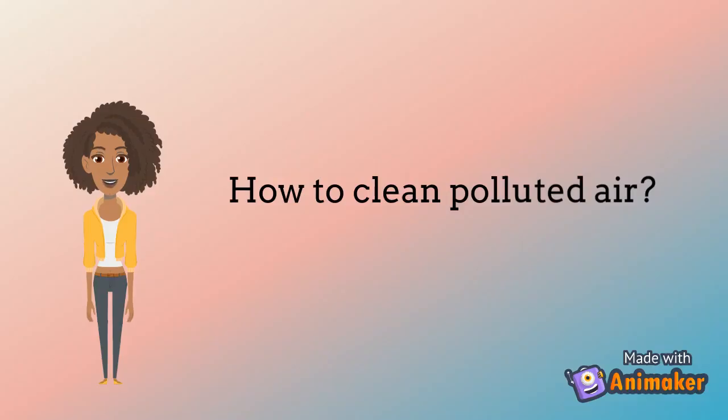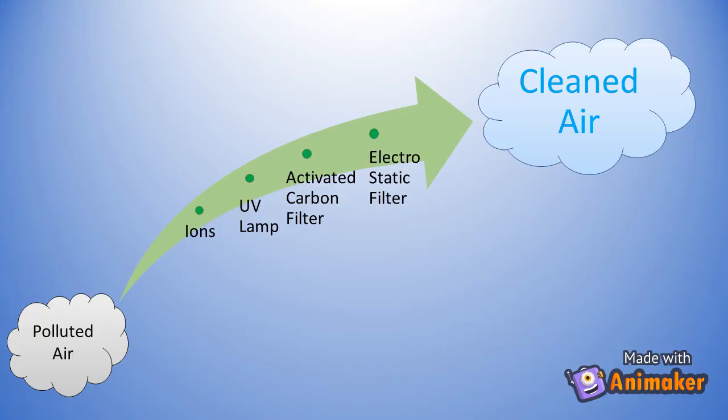Now that we know that particles are present in the air, even though we cannot see them, how do we clean the air? Industries which produce a lot of pollutants use different filtering methods to clean their air, such as using ions, UV lamps, activated carbon filters or electrostatic filters.